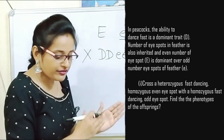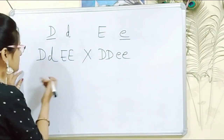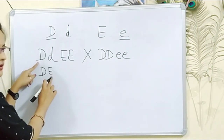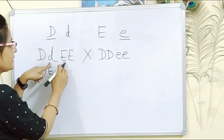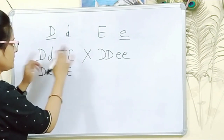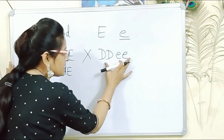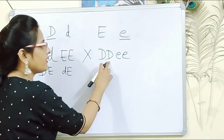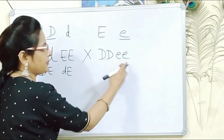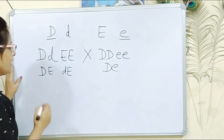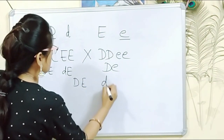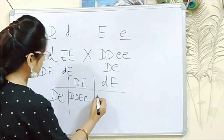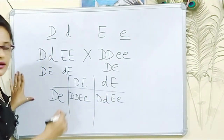Now find the phenotype of the offspring. From parent capital D small d, capital E capital E: gametes are capital D capital E and small D capital E. From parent capital D capital D, small e small e: the only gamete is capital D small e. Crossing these gives offspring: capital D capital D capital E small e, and small D capital D capital E small e. The phenotype of these offspring: capital D is dominant so fast dancing; capital E small e — capital E is dominant so even number of eye spots.